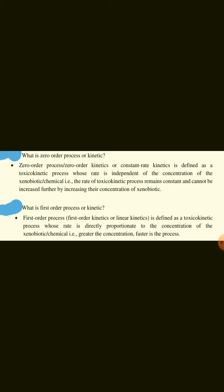What is first-order process or kinetics? First-order process is defined as a toxicokinetic process whose rate is directly proportional to the concentration of the xenobiotic or chemical. That is, greater the concentration, faster is the process.